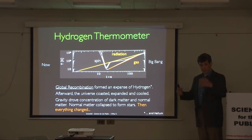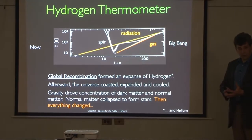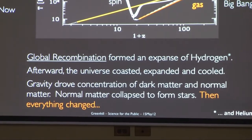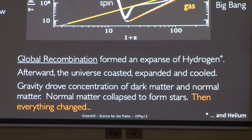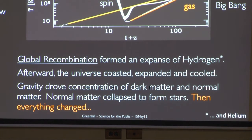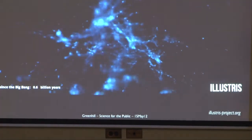After the Big Bang, there was something called global recombination. That's when the plasma, which is left over from the Big Bang, cooled enough that electrons and protons found each other. They made hydrogen. What happened between then and a billion years after the Big Bang? Theoretically, the universe coasted for a lot of that time until finally gravity drove things to collapse and form stars. At that point, everything changed.